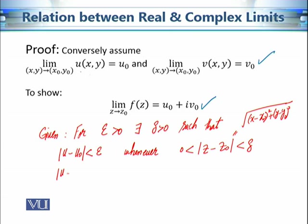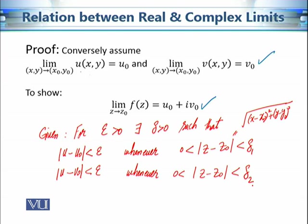Similarly, for the same epsilon, we should be able to find another delta. Let's call them delta₁ and delta₂, because these are two different functions, so these deltas should in principle be different in both cases. This is given. To simplify the proof, we should assume this to be epsilon/2 instead of epsilon. Let's take them to be epsilon/2; we will see how it simplifies the proof in the next step.